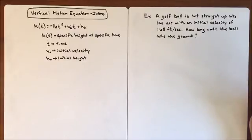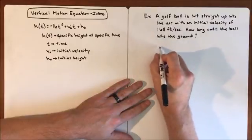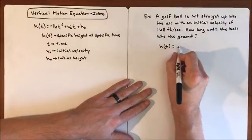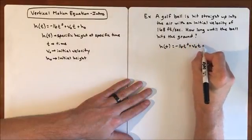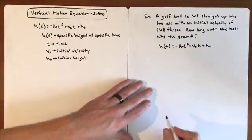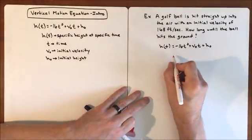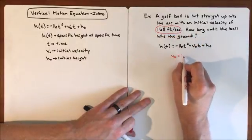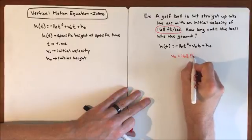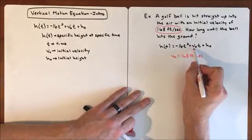The question is: how long until the ball hits the ground? First, let's write our equation, see what we know, plug it in, and figure out the answer. Our equation is negative 16t squared plus initial velocity times time plus initial height. We know the initial velocity is 168 feet per second, so we can substitute that value in.